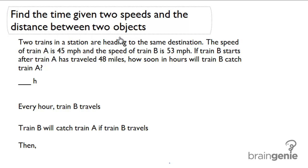In this problem, we're given one of the trains a head start and the other train is trying to catch it. Train A has already traveled 48 miles, but train B is traveling 53 miles per hour, whereas train A is only traveling 45 miles per hour.